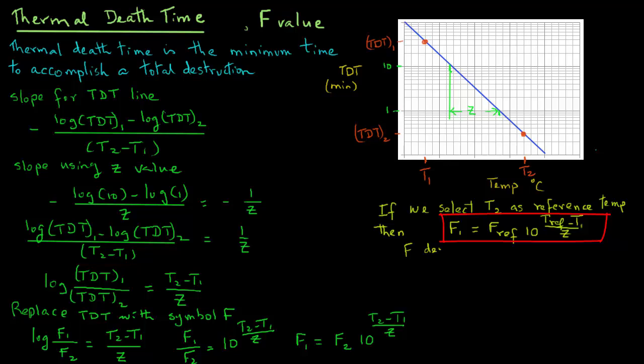Note that the F value, the thermal death time, depends on the temperature and it is specific to a given microorganism. So it is common in the thermal processing literature to use a subscript for F for T which represents the temperature, and a superscript Z for the Z value of the microorganism. We will see the application in other tutorials.